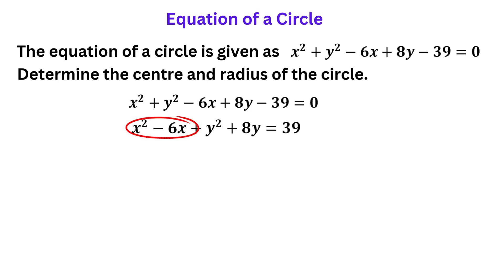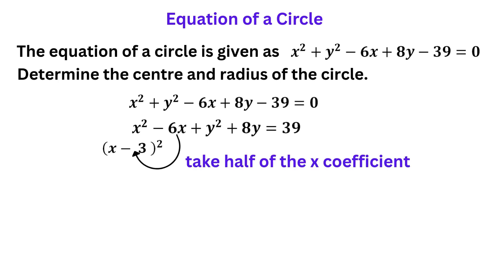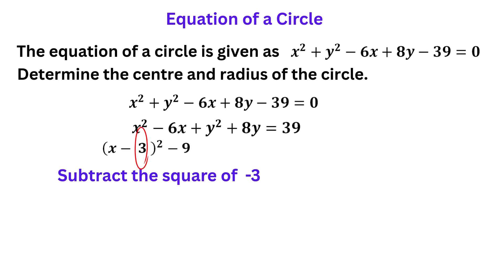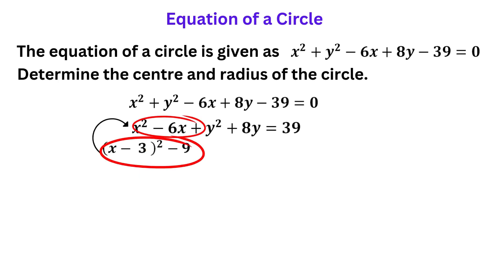Let's complete the square for the terms in X. Form brackets with a square at the top right. Inside the brackets, place X, then half of the X coefficient — that's minus 6 — which is minus 3. Outside the brackets, subtract the square of the constant inside. The square of the constant inside is 9, so we subtract 9. What we just did was rewrite the original expression, so if you expand the brackets and subtract 9, you'll get the original expression: X squared minus 6X.